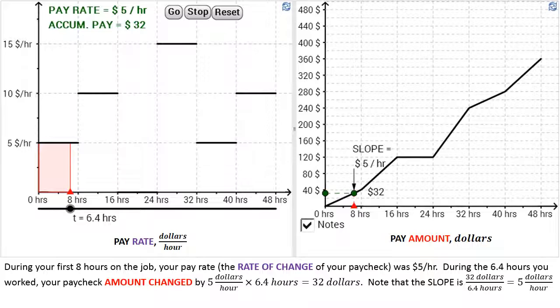Now, if you look on the graph on the right, you'll see that the slope at 6.4 hours is $32 earned divided by 6.4 hours, which gives you $5 per hour.